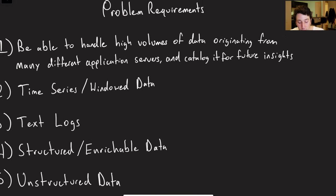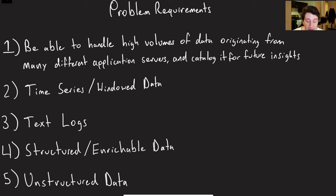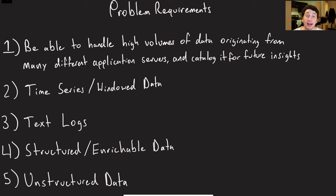So let's talk about some more formalized problem requirements. The general gist is that we're going to have a ton of volume of data coming in from all of our different application servers. If this is a big service, we're probably going to be horizontally scaling out, and as a result we've got many different origins of data. We want to be able to store all of that and analyze it later — for debugging, or for business analysts to understand who our customers are.